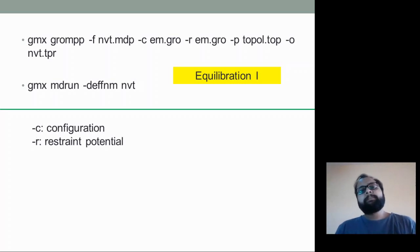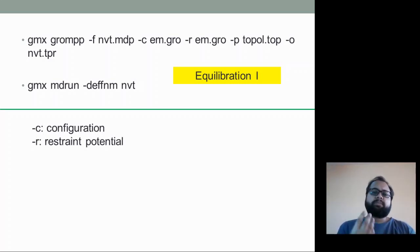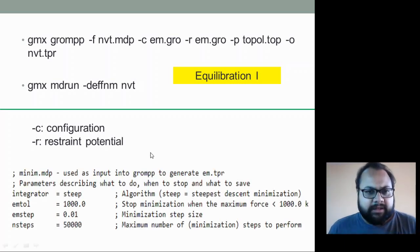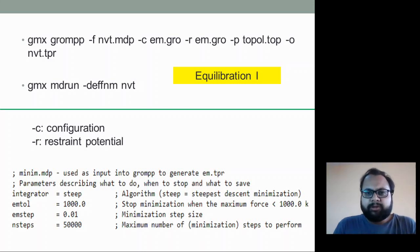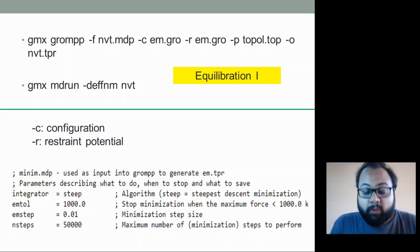Running NVT generates output files including the trajectory TRR file, which shows how the entire system — protein and surrounding water molecules — behaves at constant number of atoms, constant volume, and constant temperature. There is also a note about the MDP file which specifies 50,000 steps — we will see what that corresponds to in picoseconds or nanoseconds in the further slides.